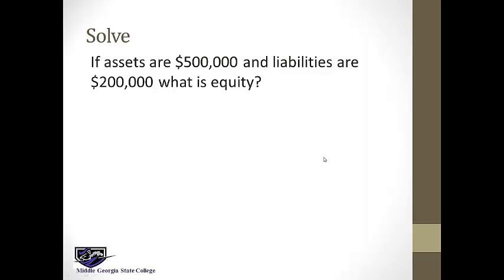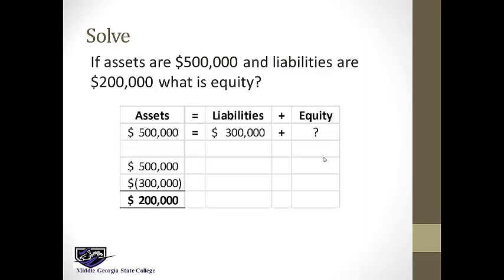If assets are $500,000 and liabilities are $200,000, solve for equity. I put assets and liabilities into the accounting equation with X for equity, then solve by subtracting liabilities from both sides. That isolates X, giving equity as $500,000 minus $300,000, which equals $200,000. You can check your answer by plugging it back in and verifying the equation is in balance — if not, find your clerical error.